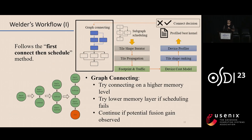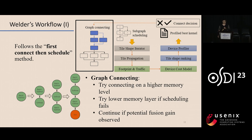Let's take a look at Welder's overall workflow. Welder follows a first-connect-then-schedule method. In the graph connecting phase, Welder tries to connect operators on a higher memory layer, including shared memory and register layers on GPUs. After connecting, Welder schedules the connected subgraph. If scheduling is not possible — due to insufficient memory space or other performance issues — Welder undoes the connection and tries connecting at a lower memory layer. But if a performance gain is observed, Welder keeps the connection and expands the subgraph to more downstream operators.